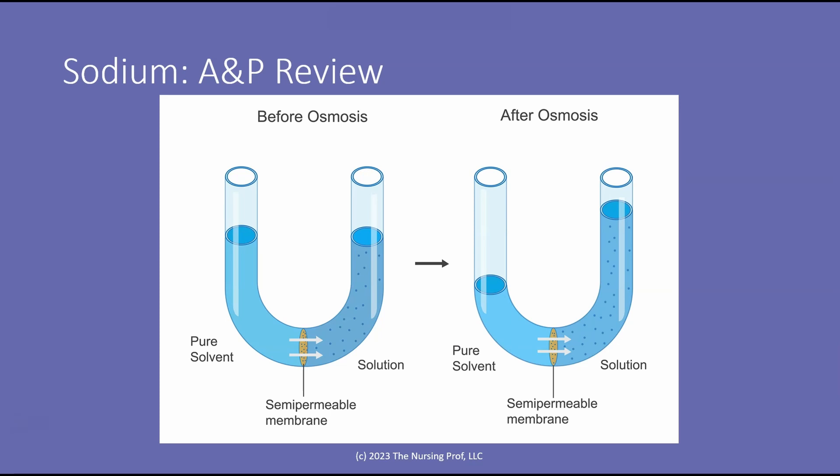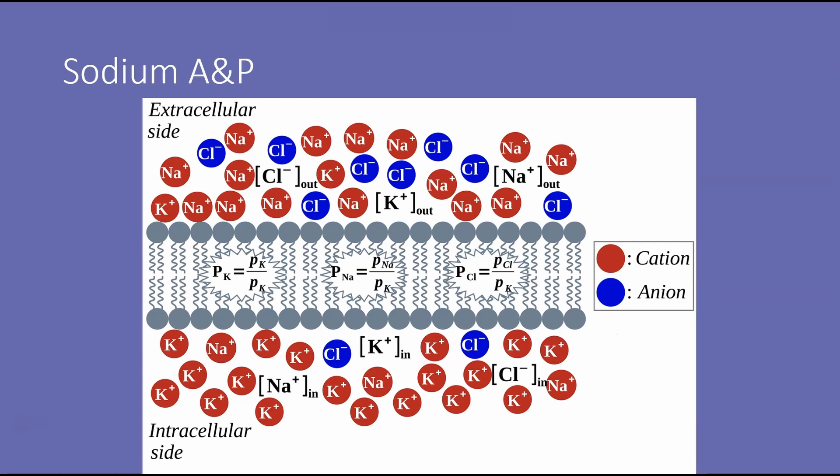Let's take that into the body and talk about intracellular and extracellular sides. On the extracellular side, notice that there are more sodium ions than potassium ions. Sodium is Na, potassium is K. More sodium on the extracellular side, less sodium on the intracellular side. On the intracellular side, we have more potassium. So potassium is responsible for controlling fluid balance inside the cell, and sodium is responsible for controlling fluid balance outside the cell.